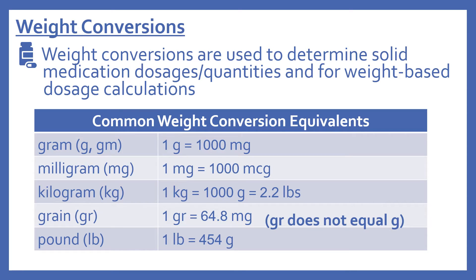One kilogram also equals 2.2 pounds. Grain, abbreviated GR, — one grain equals 64.8 milligrams. Note that GR is the abbreviation for grain, not gram — G or GM is gram, so be sure you know the difference. Pound, which is LB — one pound equals 454 grams.